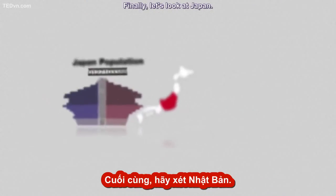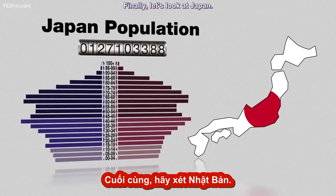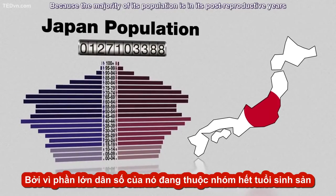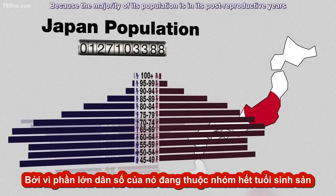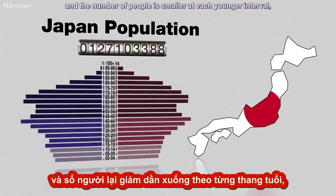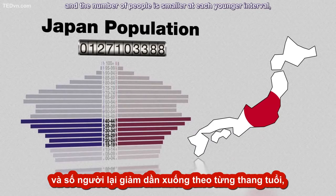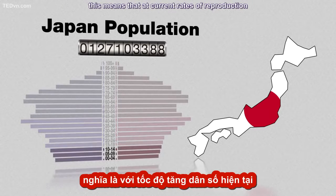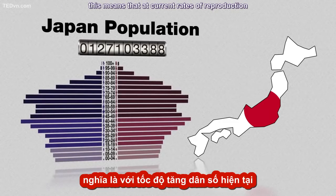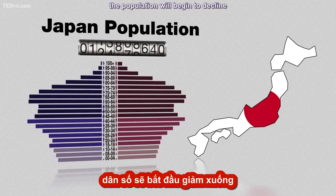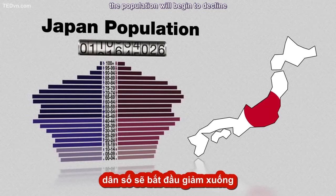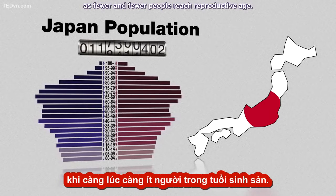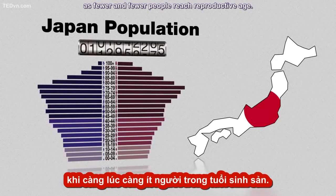Finally, let's look at Japan. Because the majority of its population is in its post-reproductive years, and the number of people is smaller at each younger interval, this means that at current rates of reproduction, the population will begin to decline as fewer and fewer people reach reproductive age.